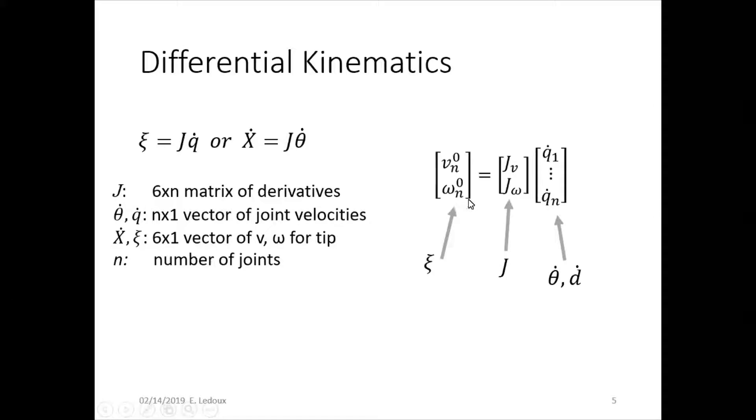We can set it up in a matrix like this. Xi, which is the joint twist, has linear and angular velocities. The Jacobian also has a linear and an angular component. And then the final matrix of q has the joint velocities.